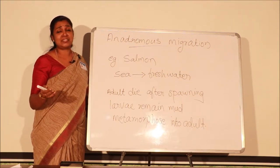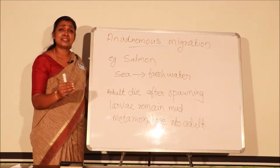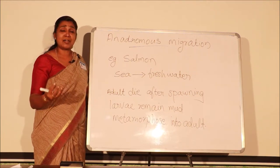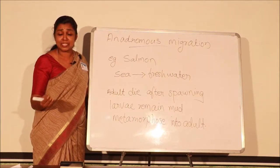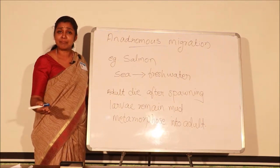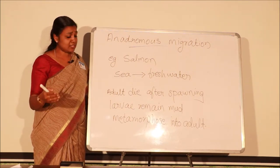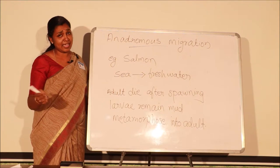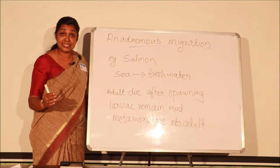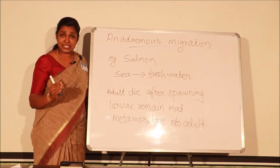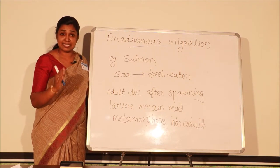After reaching the river, the salmon finds a secure place for spawning. After spawning, the salmon dies. The eggs develop into larvae — the fish fry. The young fish lives in the mud, and day after day this metamorphoses into an adult, and again this process continues. This is anadromous migration — migration from sea to freshwater.